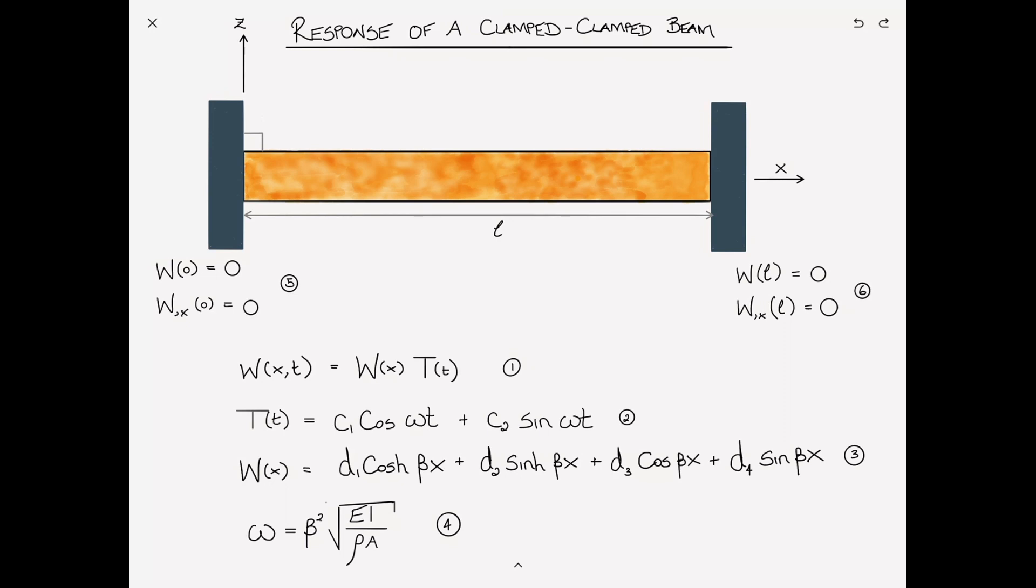So what remains to be done in this problem is to take these boundary conditions and substitute it into this equation for the shape function so that we can determine the constants. We have four unknowns and we have four boundary conditions. So we start off by copying equation 3 from the previous page and the first boundary condition at x = 0 is that the displacement W = 0. And by substituting this into equation 3, everything cancels out except for the d1 and the d3. So d1 + d3 = 0 results from that boundary condition. And as a result, d3 = -d1.